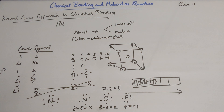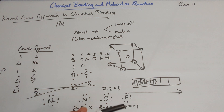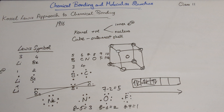So lithium is monovalent, beryllium is divalent, boron is trivalent, carbon is tetravalent, nitrogen is trivalent again, oxygen is divalent, and fluorine is monovalent. The Lewis symbol also gives us the group valency in the periodic table. In the next video we will discuss what Kossel was talking about.